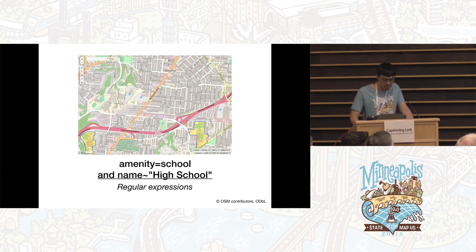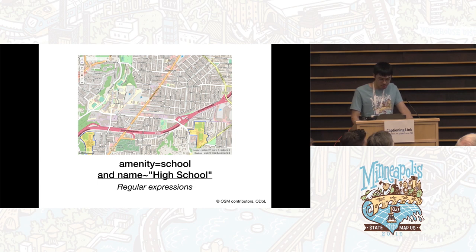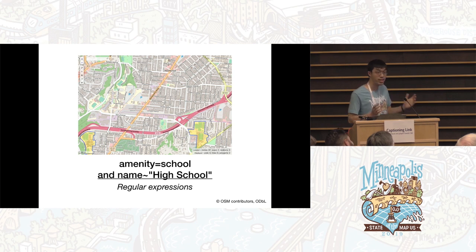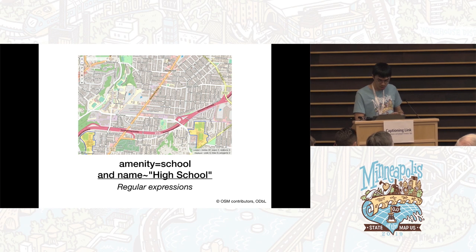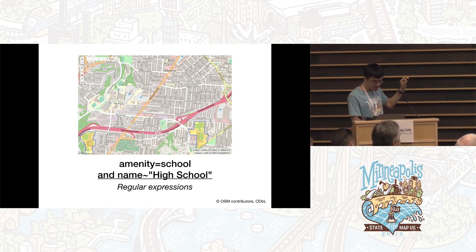Sometimes you want to match a key but you don't know the exact value. In this case, I wanted to get all the high schools, but the schools in the area haven't been tagged with a grades tag, so I'm going off of the name instead — I can assume schools are named in English here. This query matches any school with 'high school' in the name. Notice it says 'name tilde', not 'name equals'.